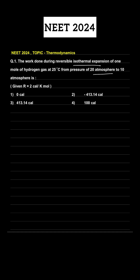In this question, work done is asked in a reversible isothermal expansion process. For a reversible process under isothermal conditions, the work done formula is: W = minus 2.303 nRT log(V₂/V₁).